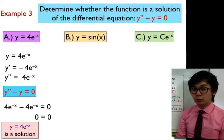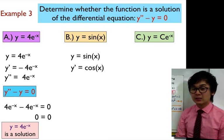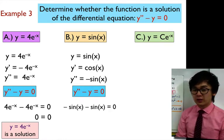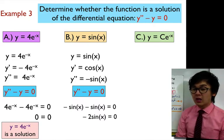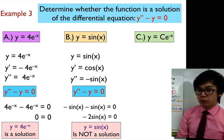For y = sin(x), its first derivative is cosine x and its second derivative is negative sin x. Substituting into the differential equation gives negative sin x minus sin x = 0, which simplifies to negative 2 sin x. Since this is not equal to 0, y = sin(x) is not a solution to our differential equation.